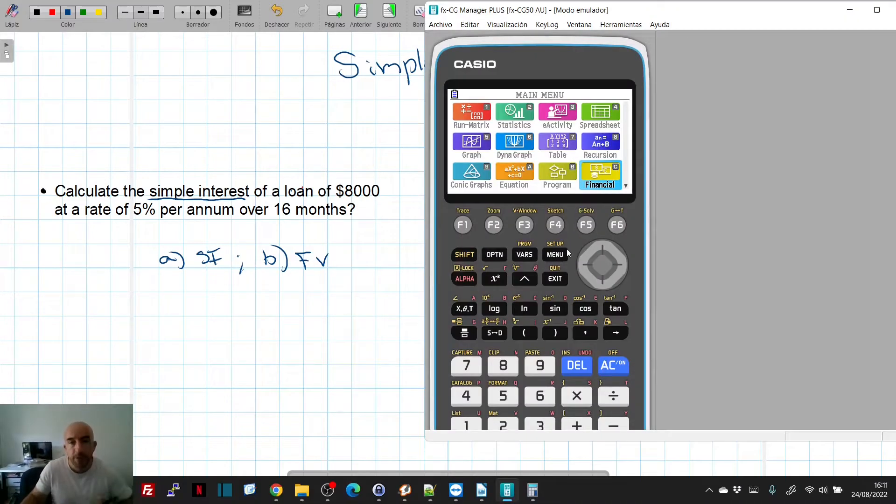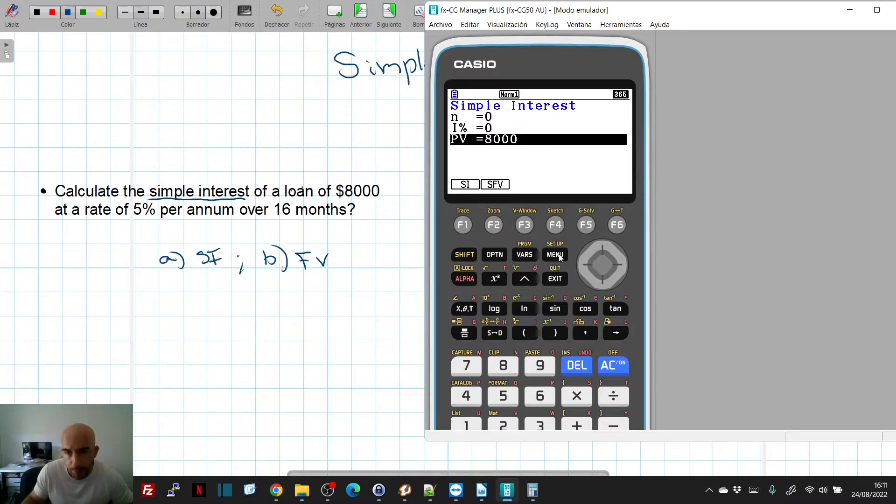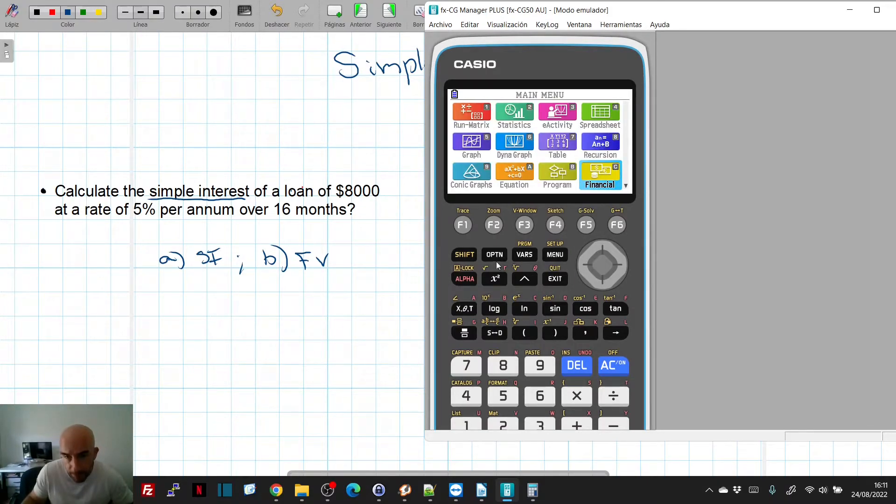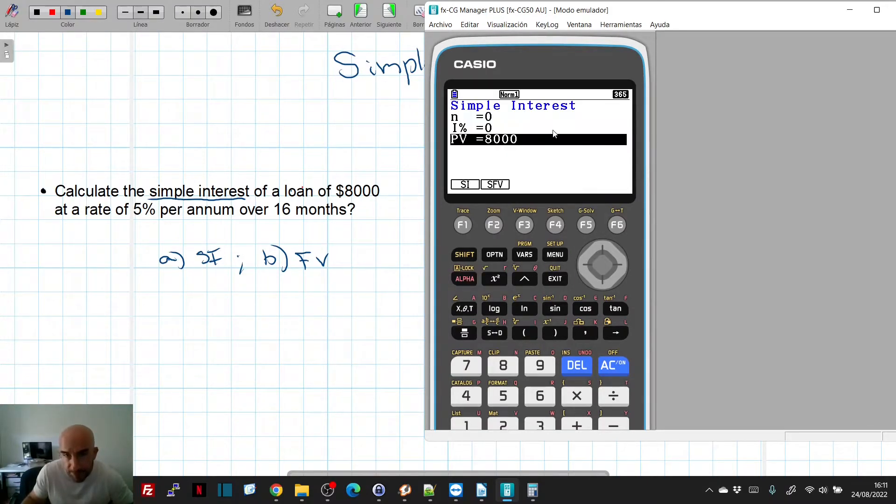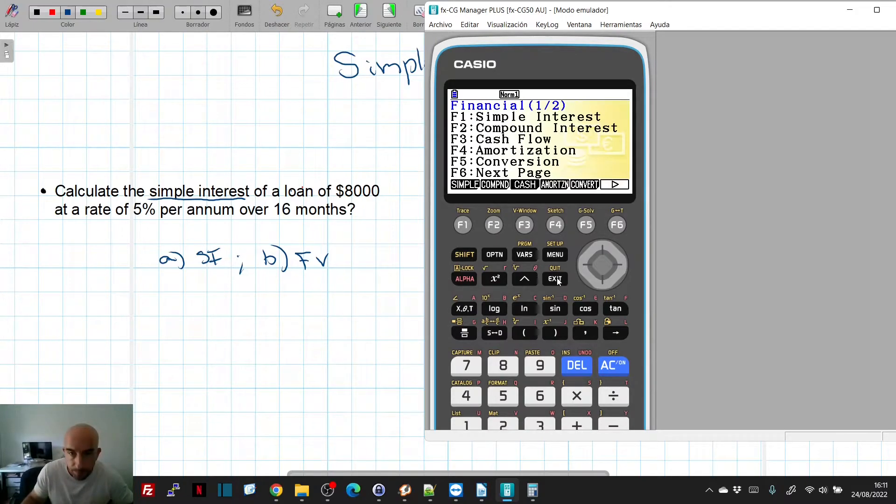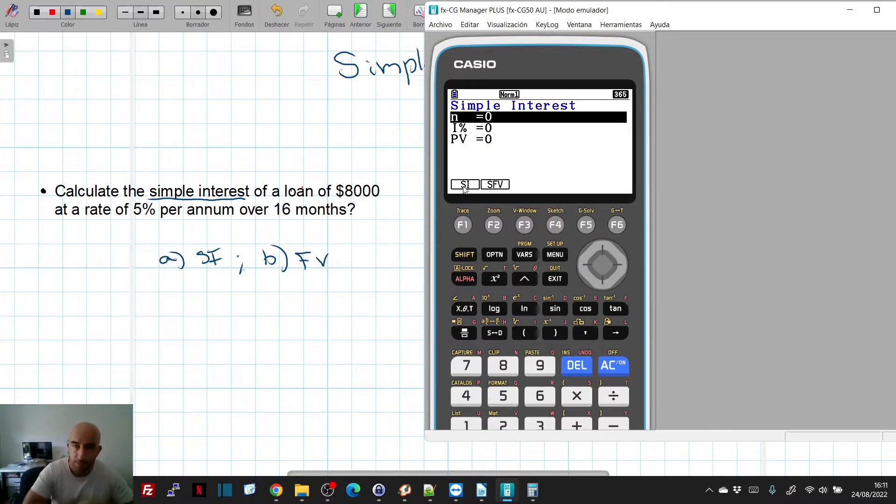So we go to our calculator. All these options are under the financial menu. So we click on menu, and we go to alpha C, which is the financial, and then we get this window where we can choose simple and compound interest. For this video, we want the simple, and we get these options. We can introduce N, interest in percentage, and principal value, and we can only obtain simple interest and the final value.